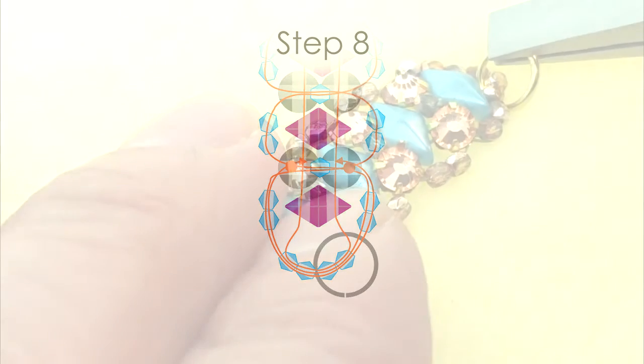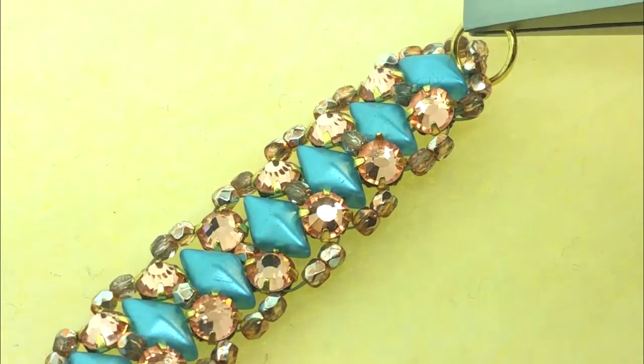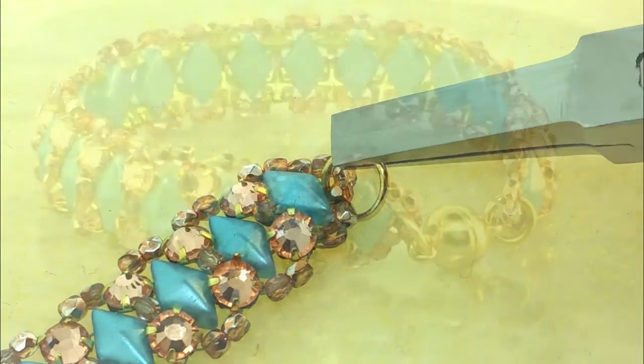Using pliers, close a jump ring around the seed bead loop and clasp. Do this at both ends of the bracelet.